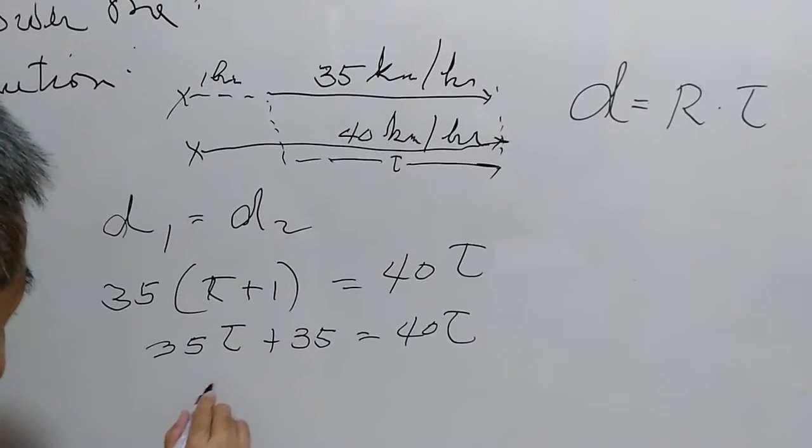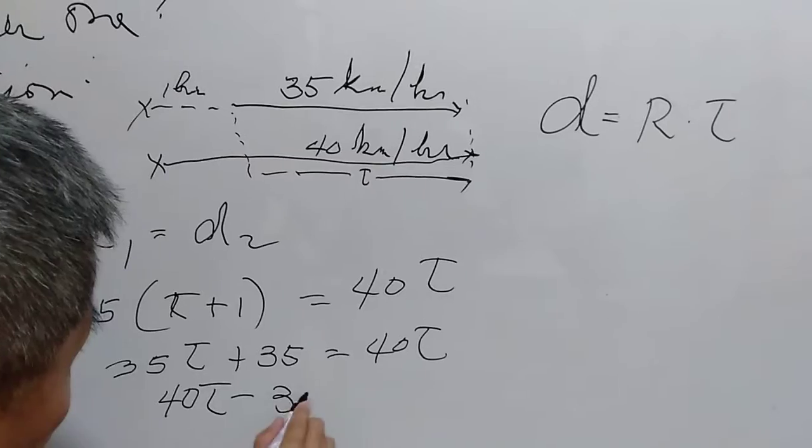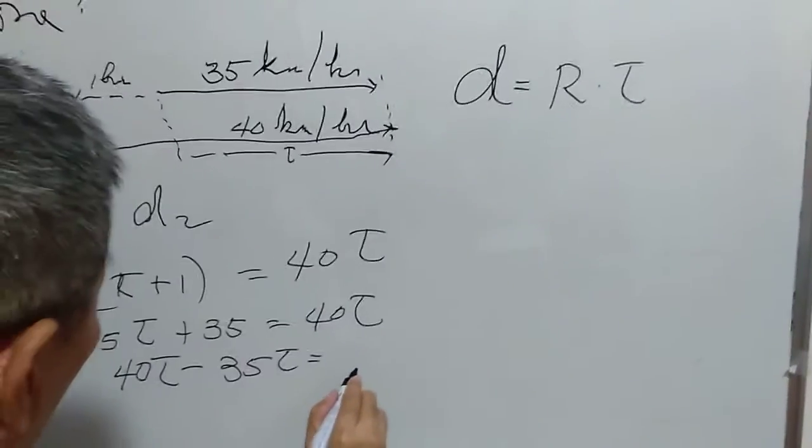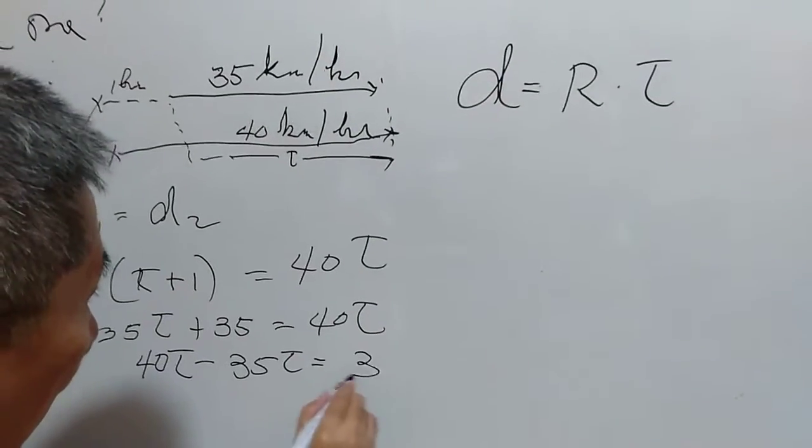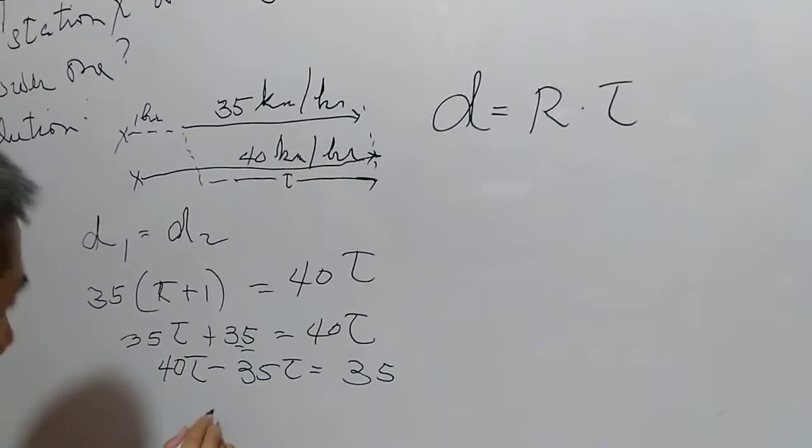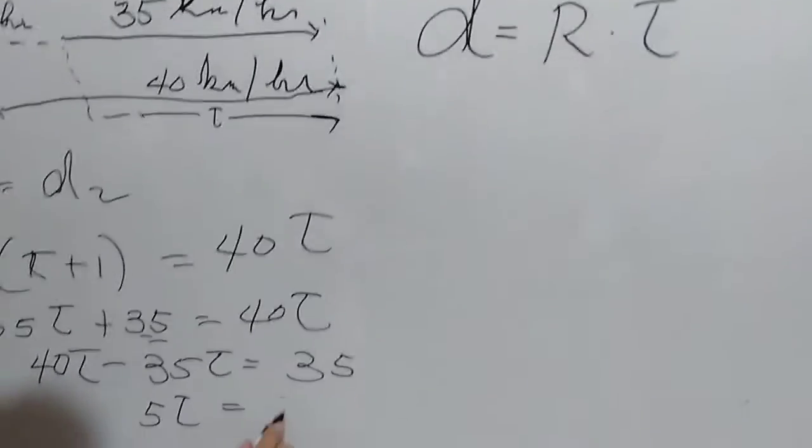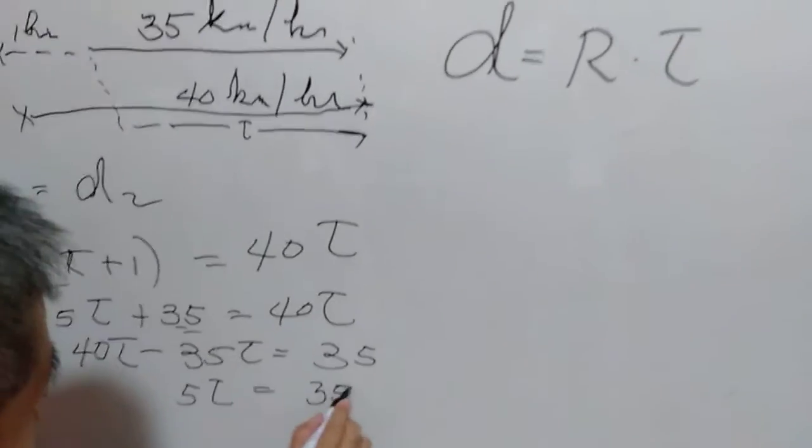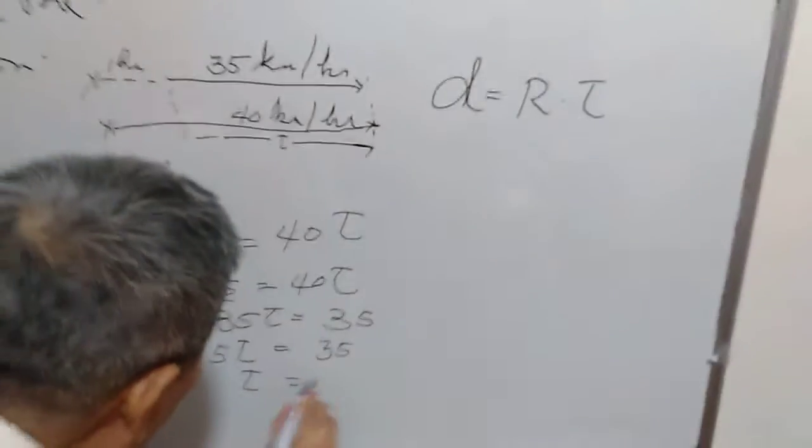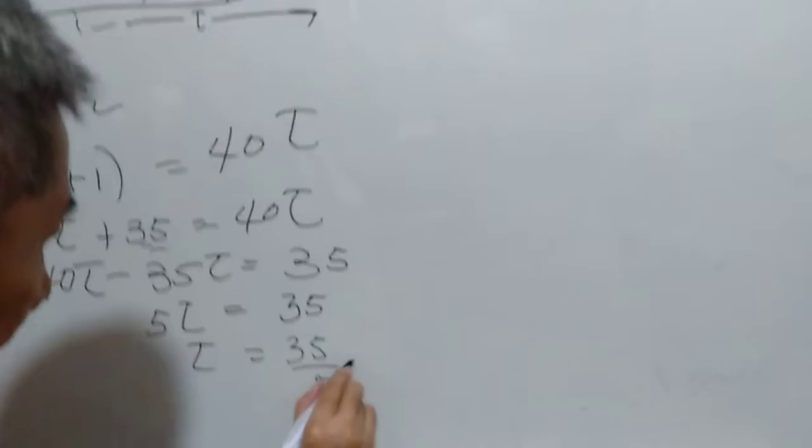And transposing the T on the other side of the equation, we have 40T minus 35T is equal to 35. So we have here 5T is equal to 35, and T is equal to 35 over 5, which is equal to 7.